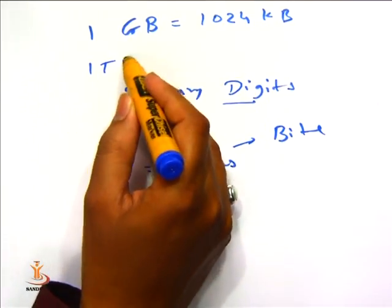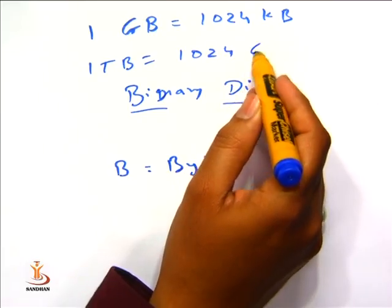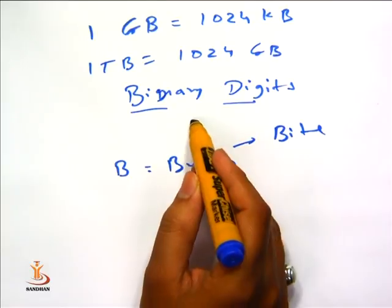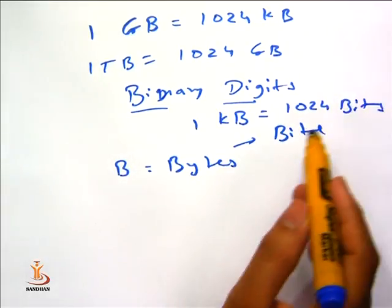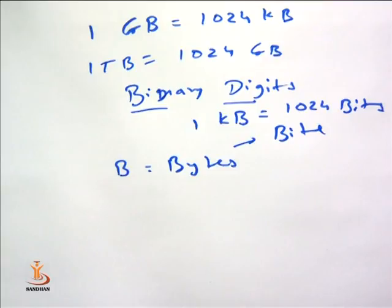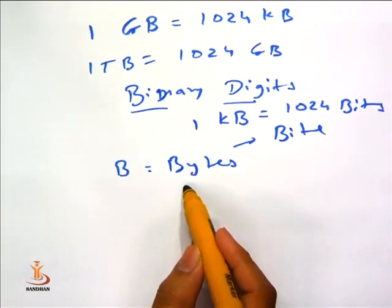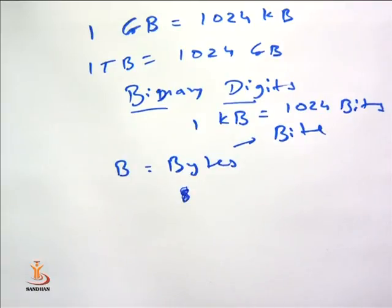1 TB means 1024 GB. 1 KB that is equal to 1024 bits. In all this conversion, bytes means there are 8 — if base is 8, octal system is there. If base is 2, binary system is there. So if we have the number 429, this is a decimal system number. So how can we convert this decimal system to the binary system?